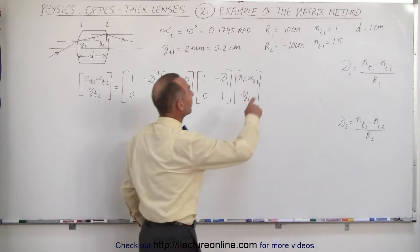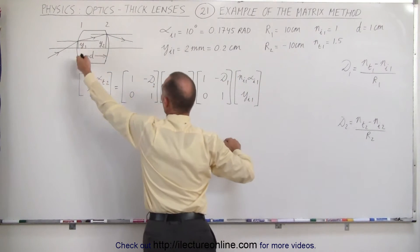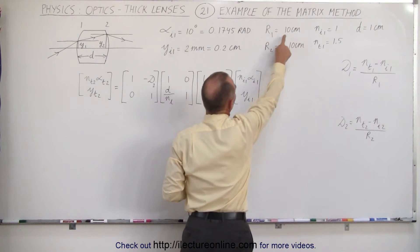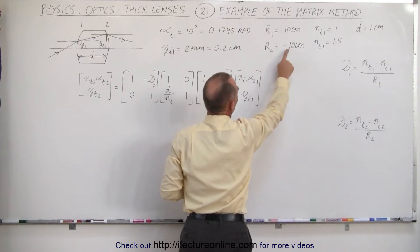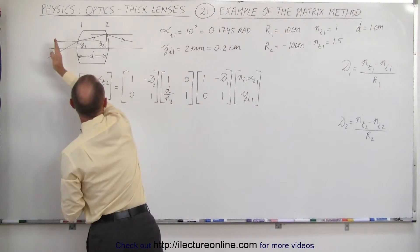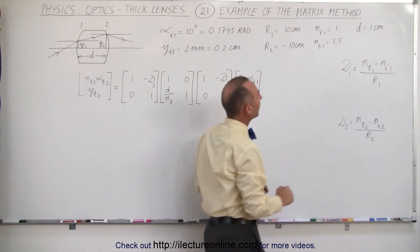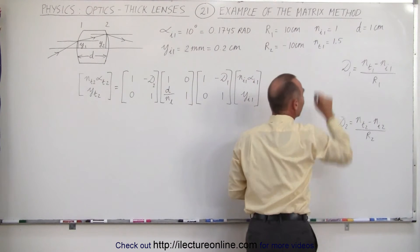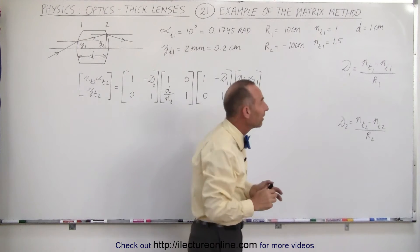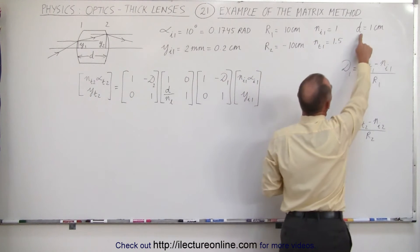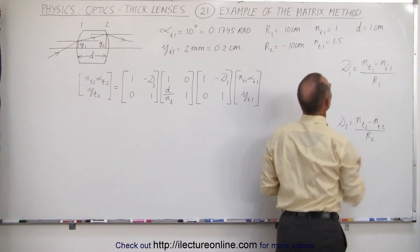Then we were given the information about the curvature of the front and back side of the lens. The curvature of the front side is 10cm, the curvature of the back side is minus 10cm, because the curvature is away from the front of the lens. The index of refraction outside the lens is 1, which means it was air, and the index of refraction inside the lens is 1.5, typically made out of glass, and the thickness of the lens is 1cm.